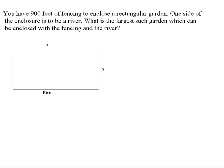The thing we notice is that from here to here, along with from here to here, and from here to here, if you added those up, you would get 900 feet, because you don't need to use any fencing along the river.